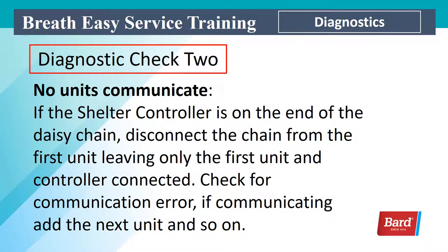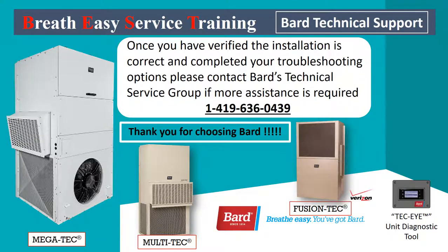If you have no units communicating, if the shelter controller is on one end, take the unit next to the shelter controller. If it's not on an end, disconnect everything beyond the controller so your controller is only connected to one unit. Check for a communication error — if it's communicating, add the next unit and so on until you locate the communication problem. Thanks for watching this Breathe Easy service training edition. Once you've verified the installation is correct and completed your troubleshooting options, please contact Bard Technical Service Group if more assistance is required: 1-419-636-0439. Thank you for choosing Bard.